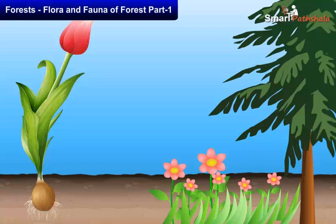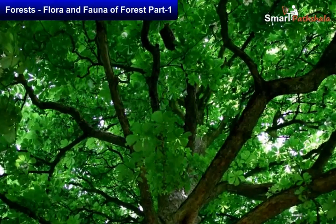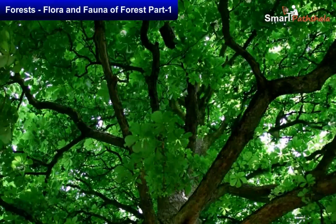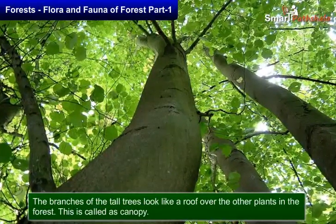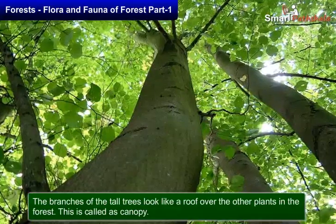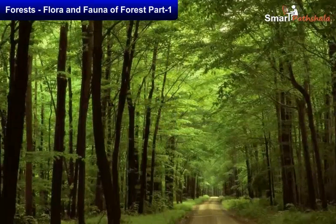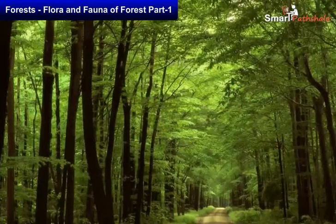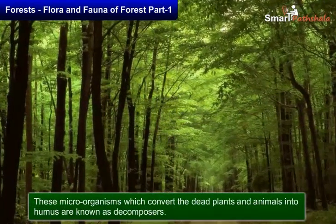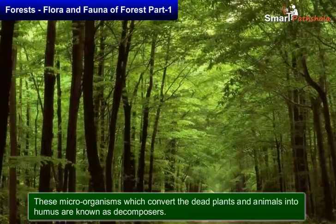Some seedlings grow up into trees. The branchy part of a tree above the stem is called the crown of the tree. The branches of tall trees look like a roof over the other plants in the forest — this is called the canopy. Different trees have different types of crowns of different sizes, and these crowns create different horizontal layers in the forest, known as understories.